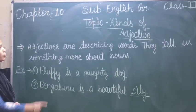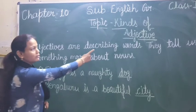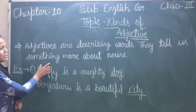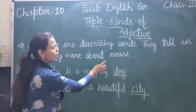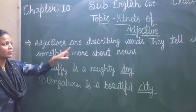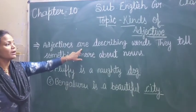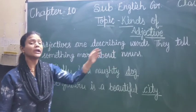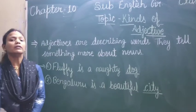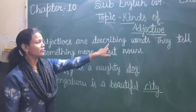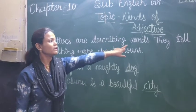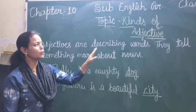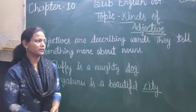What is adjective? Adjectives are describing words. They tell us something more about nouns. Adjective kya hota hai? Adjectives are describing words — adjectives describe nouns. It means adjective nouns ko describe karta hai. Describe means nouns ke baare me kuch aur batata hai.